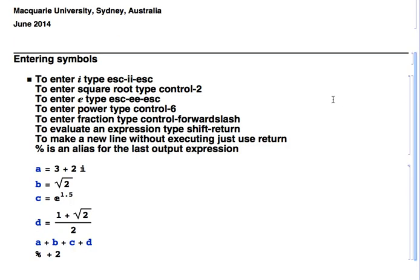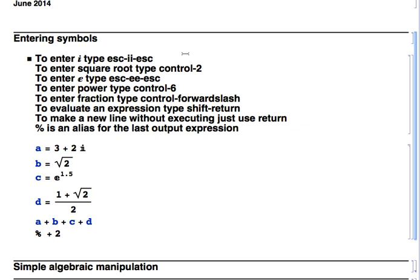To enter the complex number i, type escape, then ii, then escape. To enter a square root, type Control+2. To enter the irrational number e, type escape, E, E, escape. To enter a power, type the number then Control+6, then the exponent. To enter a fraction, type Control+forward slash. To evaluate an expression, press Shift+Return — just Return takes you to a new line. The percentage symbol is an alias for the last output expression.